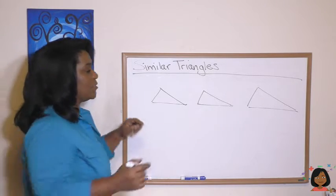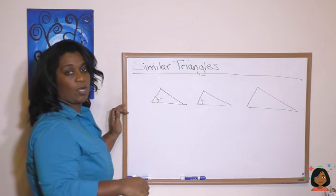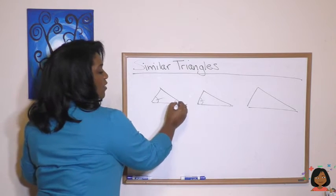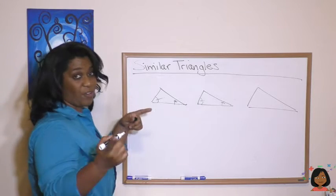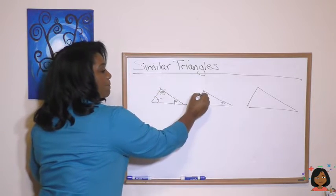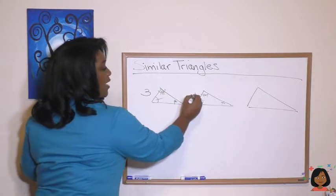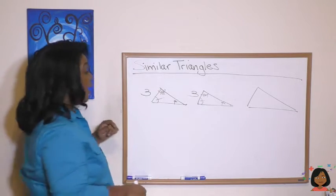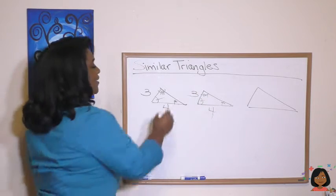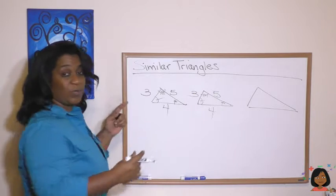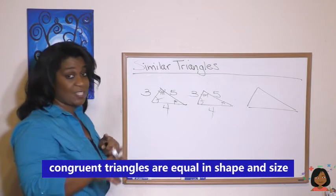So here I've got some triangles and if I told you that this angle and this angle were equal and then also this angle and this angle were equal, we can assume that the third angle is also equal, right? But what about the length of the sides? If this is a 3 and I said that this was a 3 and if this was a 4 and I said that this was a 4 and if this was a 5 and that was a 5, I would call these two triangles congruent. They're equal in size and shape. That's congruent.